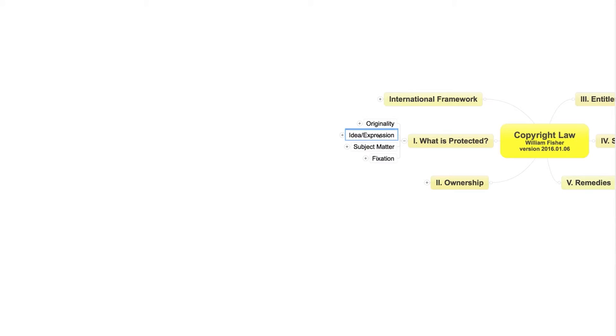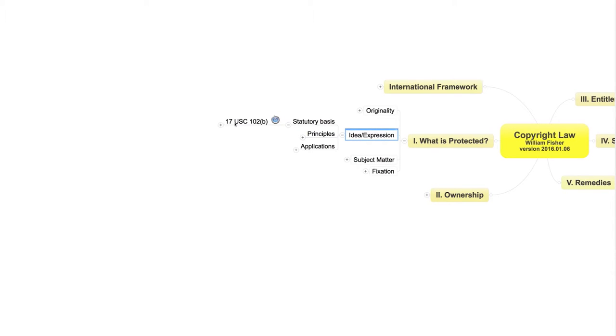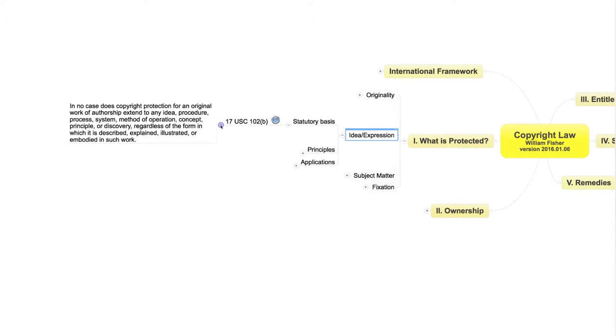We turn now to the second of the foundational doctrines in copyright law, the idea-expression distinction. Every system of copyright law contains some version of this distinction. In U.S. law, its statutory locus is Section 102B of the Copyright Act.